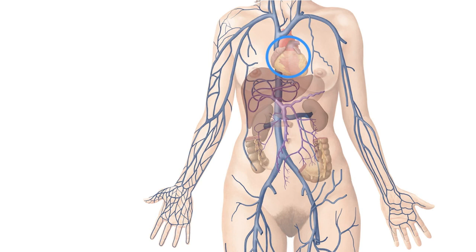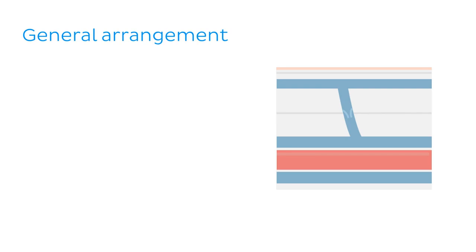Before we start, I want to briefly cover a couple of concepts that will be useful for you in this tutorial and for when you're looking at the arrangement of the venous system in general. I'll use this diagram here to help illustrate these concepts. Think of it as a really simplified cross-section, with the skin's surface being the top layer.